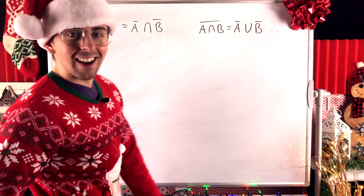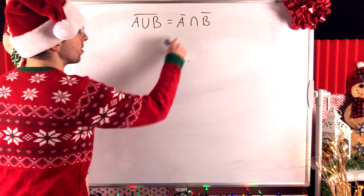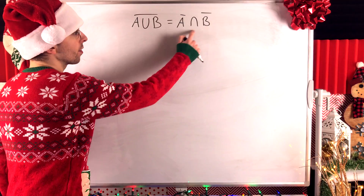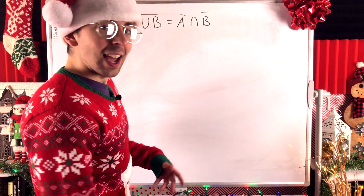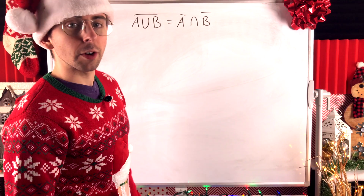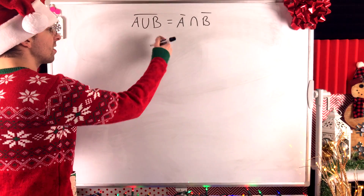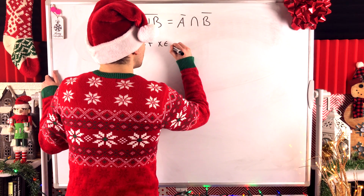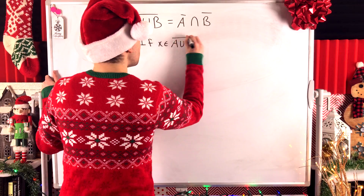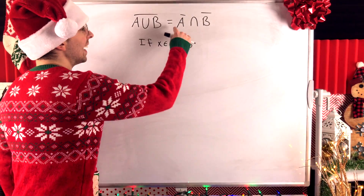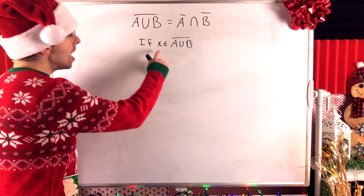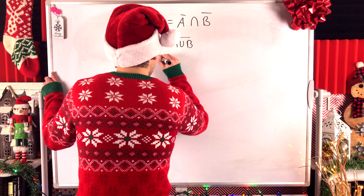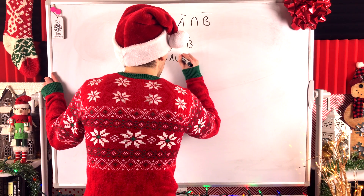We're going to begin by proving the first law. We want to show that this set equals this one. We'll start off by showing that the complement of A union B is a subset of A complement intersect B complement. We begin our subset proof by considering an arbitrary element: if x is an element of the complement of A union B, we want to show it must also be in A complement intersect B complement. By definition of set complement, x is not an element of A union B.